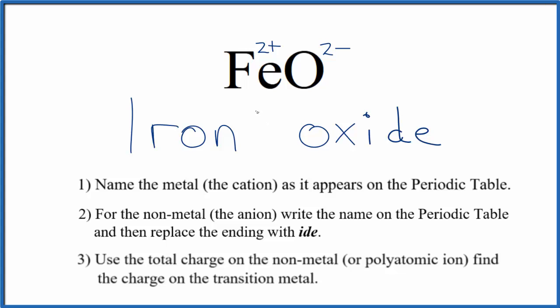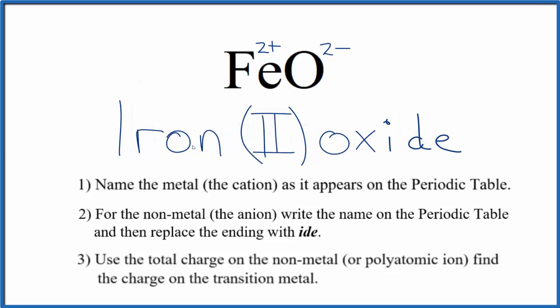So we put our roman numeral II in parentheses. The name for FeO is iron(II) oxide, and the II in parentheses comes from the 2+ charge on the iron.